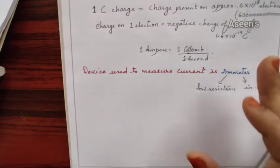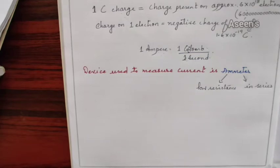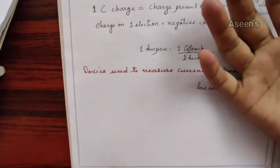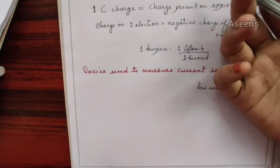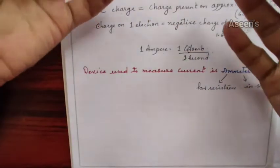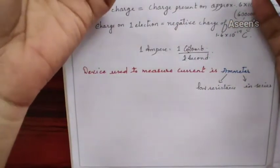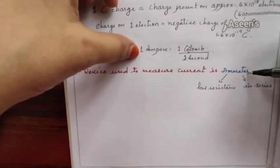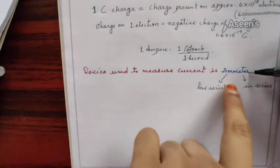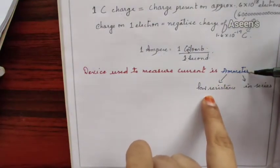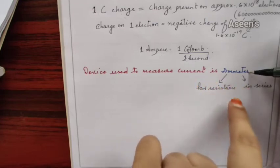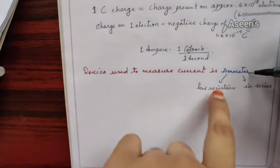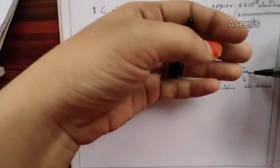There is no device to measure charges, but there is a device to measure current - since we use domestic current and need to know how much we're using. This device is called an ammeter. The ammeter uses very low resistance. In short, resistance is like a blockage - something that doesn't let current move forward.